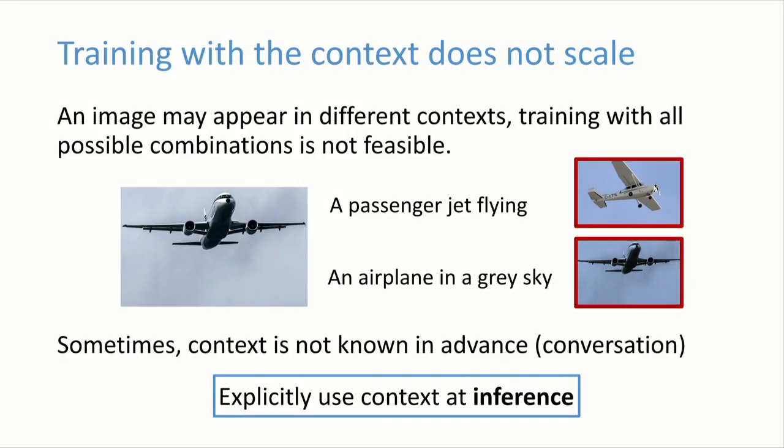So how can we build systems that take such context into account? The naive way would be to construct large training sets where you take target images and their context, create discriminative descriptions, and train models with images and their context. The problem is that this doesn't scale — the space of possible context is just too large, and for every different context you need a different description. In some cases, the context is not even known in advance; for example in a conversation, the context keeps changing. So we need to develop systems that can train without context and take context into account at inference time.